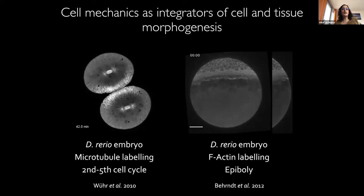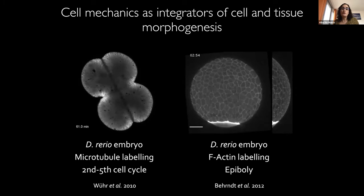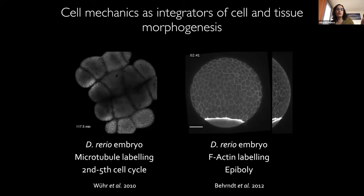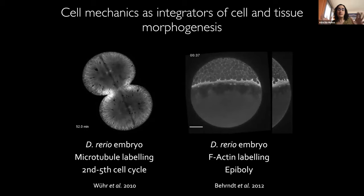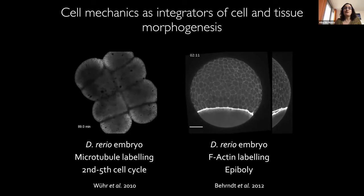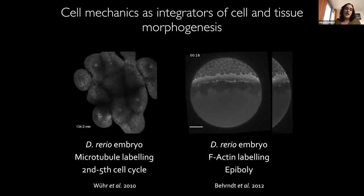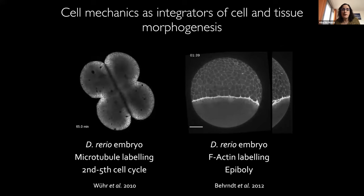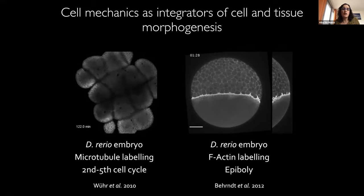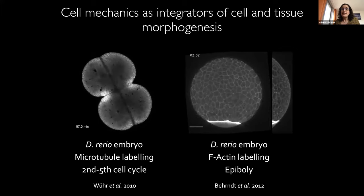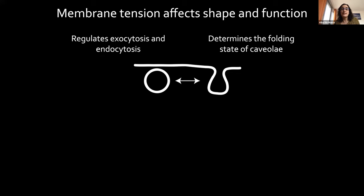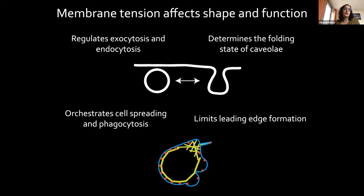We focus on cell surface mechanics. People have mainly studied forces propagated within the cytoskeleton — you can see microtubules and actin in the first hours of zebrafish division — and they're very dynamic and powerful. But in a cell, the actual outer boundary is the plasma membrane, and its tension has been shown to integrate a wide variety of behaviors. This ranges from the balance between exocytosis and endocytosis, regulating the folding state of caveolae, orchestrating cell spreading and phagocytosis, and limiting leading edge formation in migrating cells.